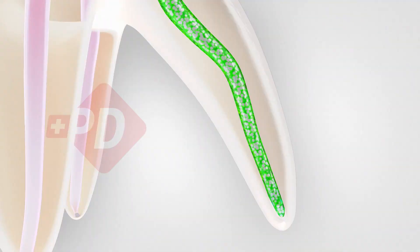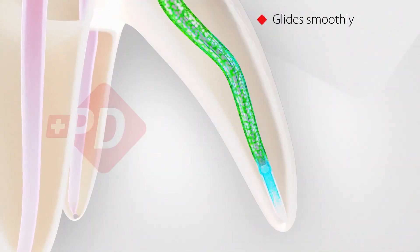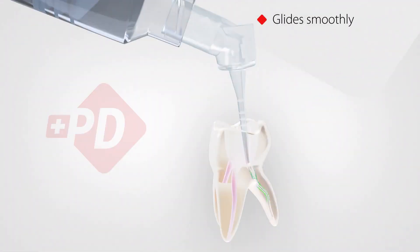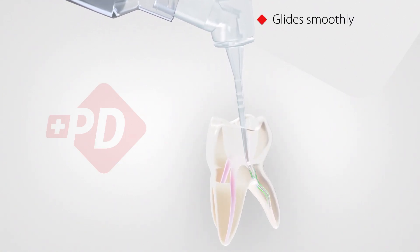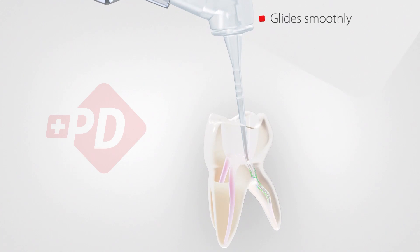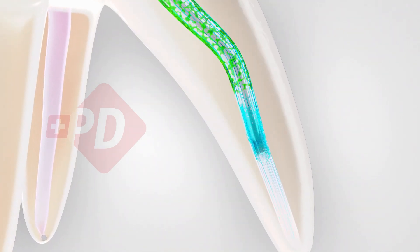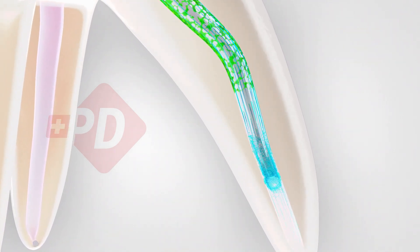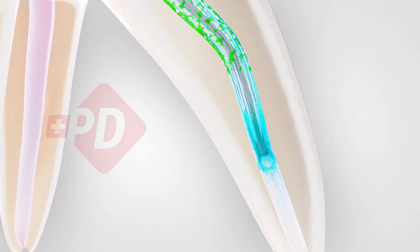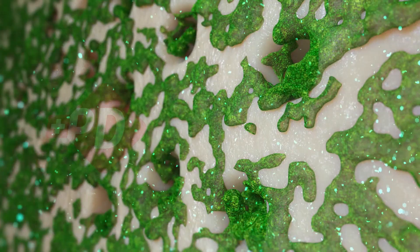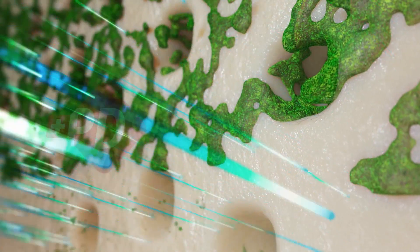AIRIFLEX glides smoothly inside the root canal. It favors up and down motion to agitate solutions and fully irrigate the root canal system. Both opposite vents deliver solutions deep into the dentin to improve detachment of soft and hard residues.